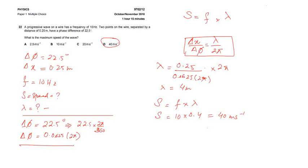This question is about progressive waves, and it's also including path difference, phase difference, and speed of the wave. A progressive wave on a wire has a frequency of 10 Hertz.